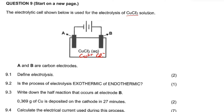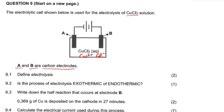Looking at the electrodes, A and B are carbon electrodes. Being inert, they do not react with anything — they just act as electrodes, but they are good conductors of electricity.